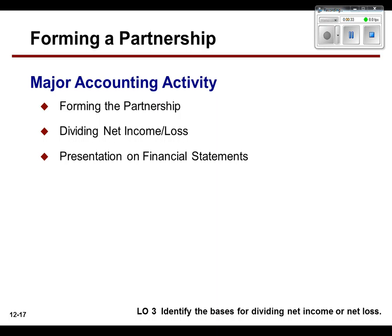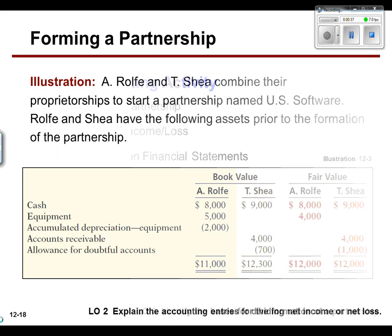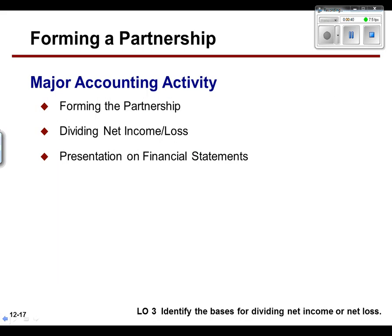The second part, 12-2 of the chapter, covers what accounting activity is associated with partnerships and how it differs. It really doesn't differ that much, but the three big types of accounting activity you need to know are: how to form the partnership and what transactions go with that, how to divide the net income or in some cases net loss, and what it all looks like on the financial statements when there are two or more people with two sets of capital and two sets of drawing. That's what I'm going to focus on today.